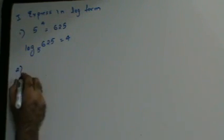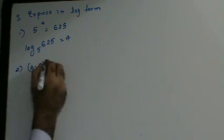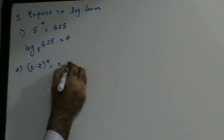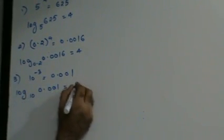One more sum. Suppose if I have 0.2 raised to 4, which is 0.0016 — how do I express this in terms of log? Log 0.0016 to the base 0.2 is 4. Next: suppose if I have 10 to the power of minus 3 is 0.001, so I can say log 0.001 to the base 10 is minus 3.